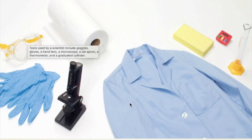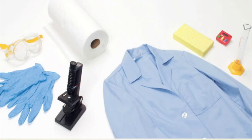This is a microscope, lab apron, sponge, timer, and a graduated cylinder. What are some other tools that you can think that a scientist might use?